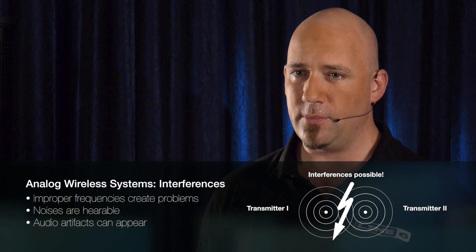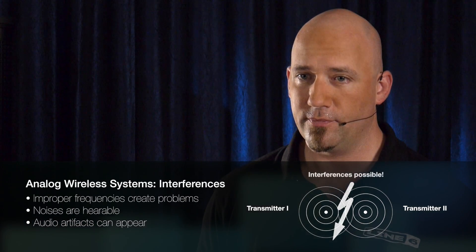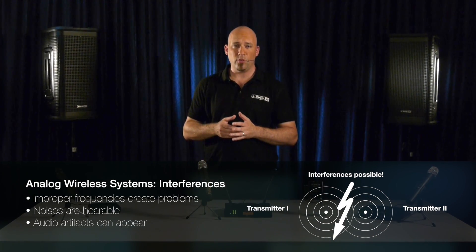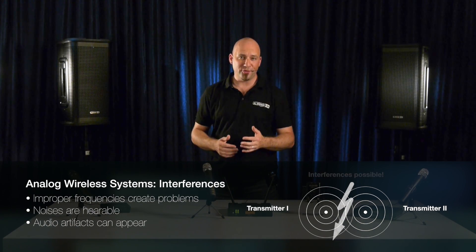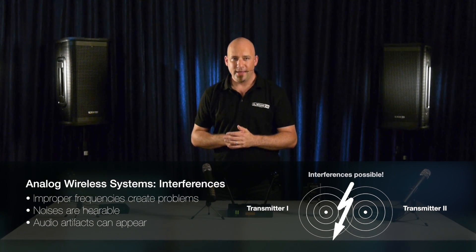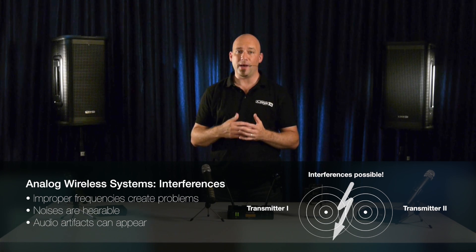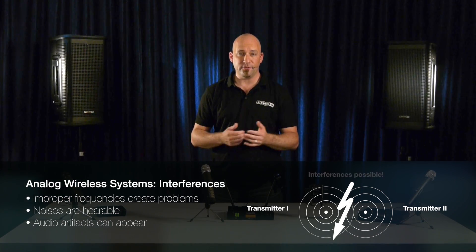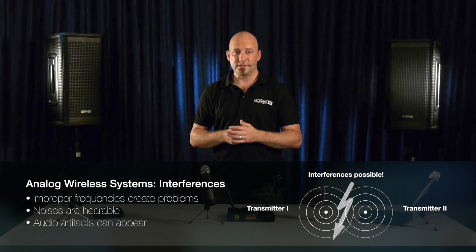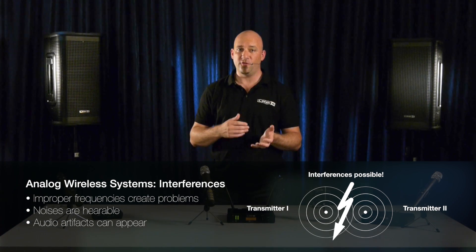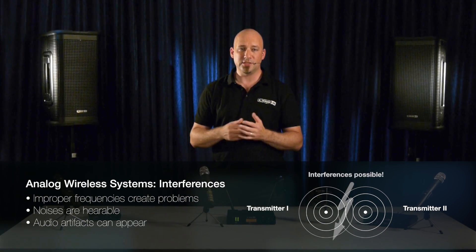The squelch circuit's main purpose is to mute the audio output when the transmitter signal is not being received. A common method is to have the transmitter always transmit a pilot tone along with the audio, usually at a very high audio frequency, filtered out before the audio is output from the receiver. If the receiver does not detect the pilot tone at the expected level, the squelch circuit mutes the audio. However, since modulated tones can be created due to interferences, spurious audio is still able to pass through the system in certain circumstances.